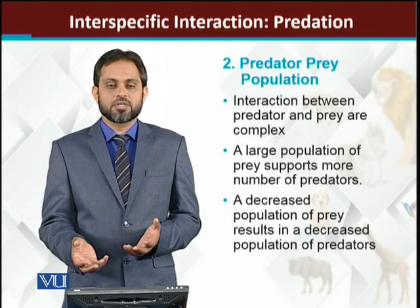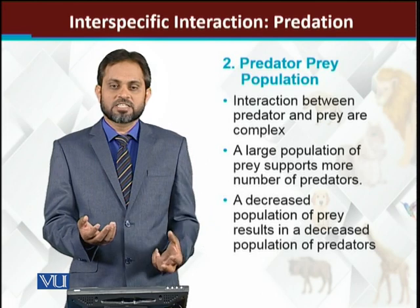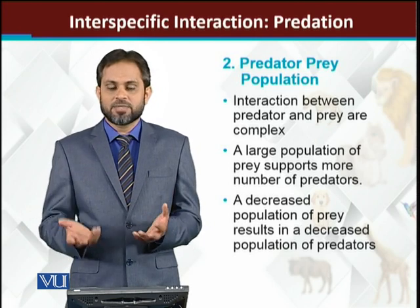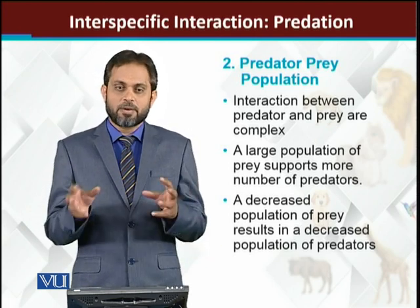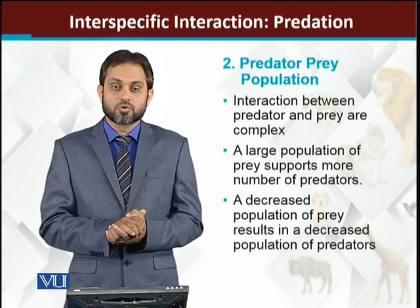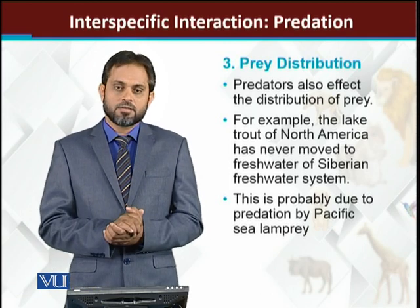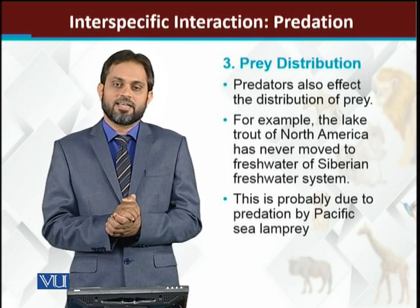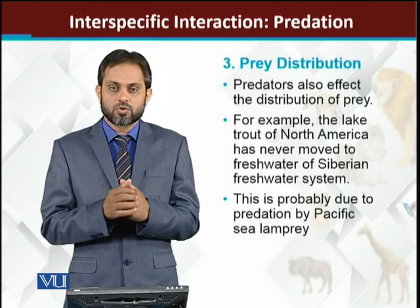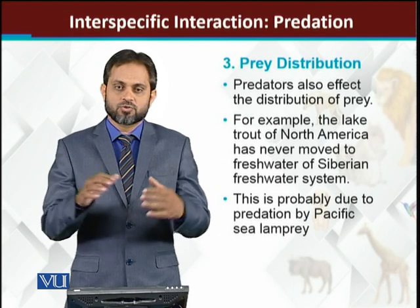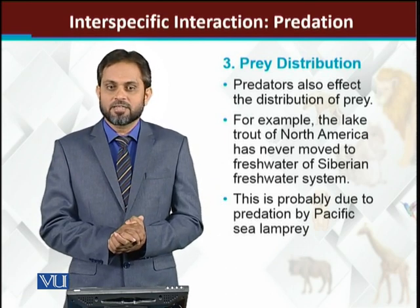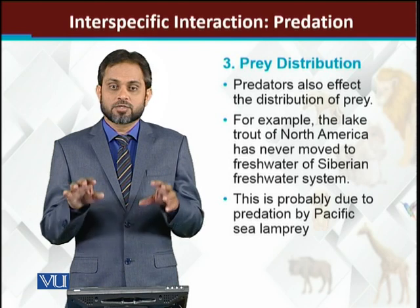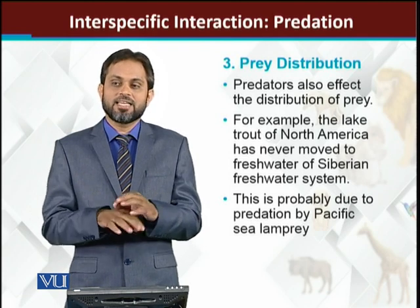The predator and prey populations control each other — if the population is bigger, the predator population is bigger and they will control it. The second point is the prey distribution: the predator is also controlling the distribution of the prey. If the prey is in certain areas, the predator will control it in those areas.